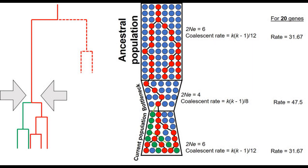If that's not weird enough, things are about to get weirder. For any population, or any two individuals, all the individuals can be traced back to a single common ancestor — the most recent common ancestor, or MRCA. Logically, all the parents, grandparents, great-grandparents, and so forth of that common ancestor are also necessarily common ancestors.